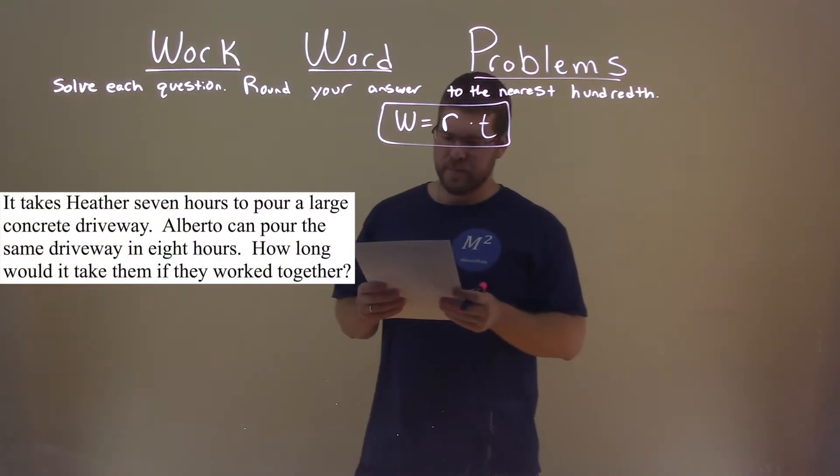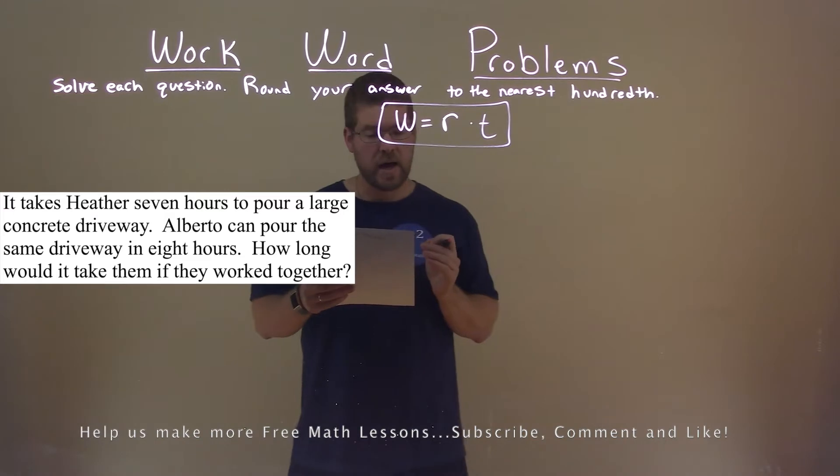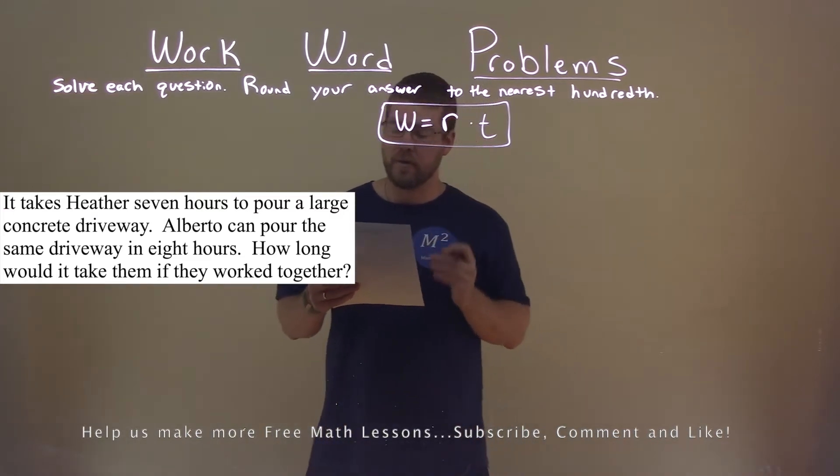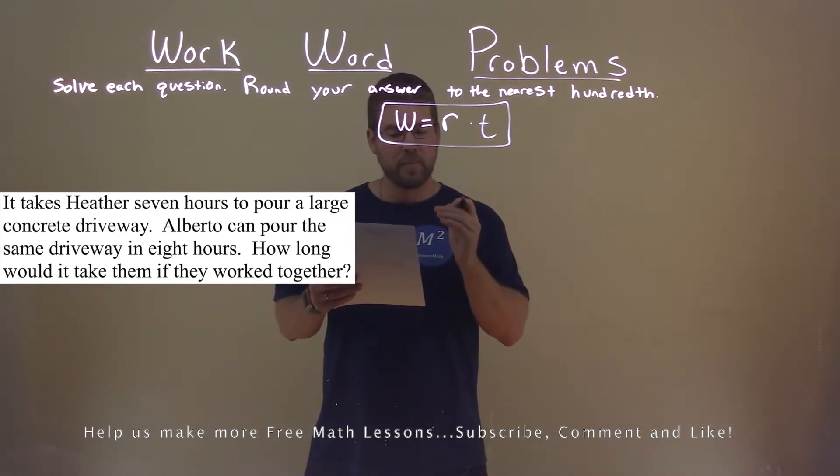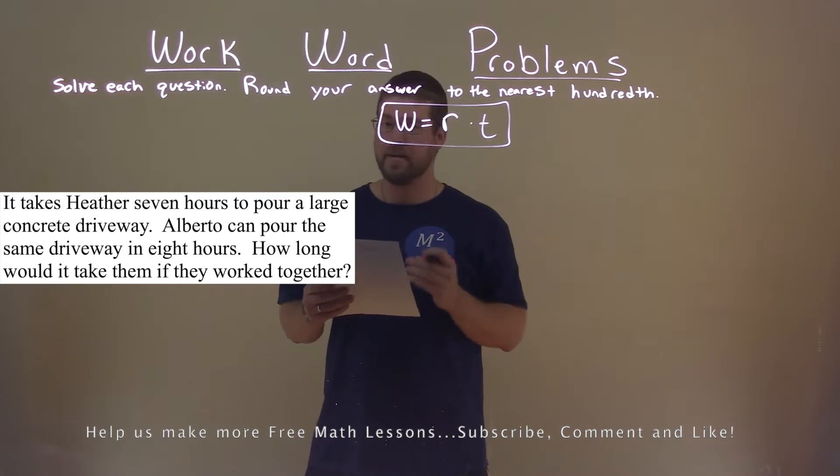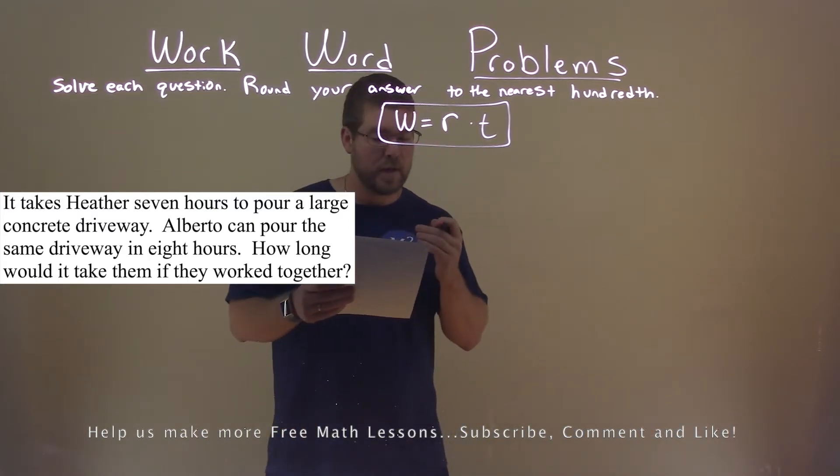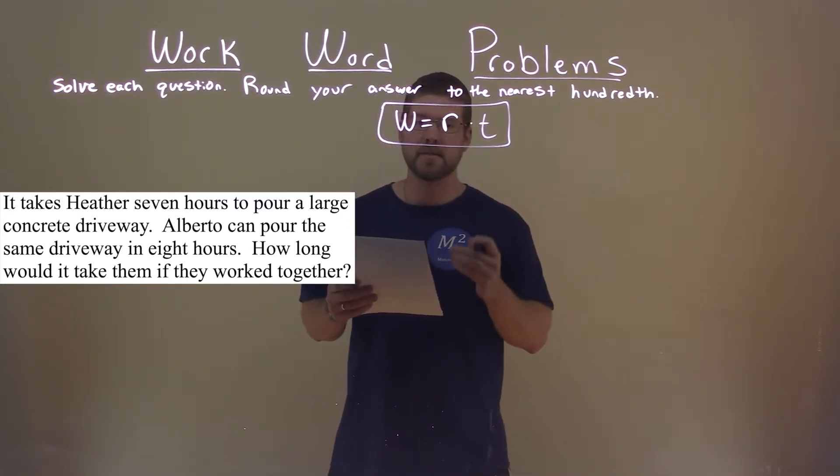We're given this problem right here. It takes Heather seven hours to pour a large concrete driveway. Alberto can pour the same driveway in eight hours. How long would it take them if they worked together?